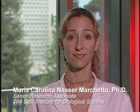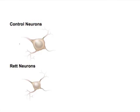We then compared neurons derived from Rett syndrome patients to neurons obtained from non-affected individuals. Interestingly, we noted that the diameter of the neuronal soma was smaller in Rett neurons when compared to controls.